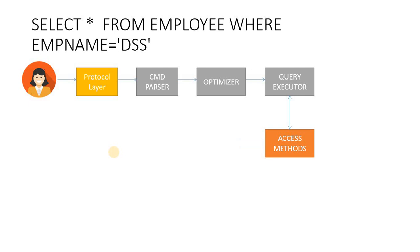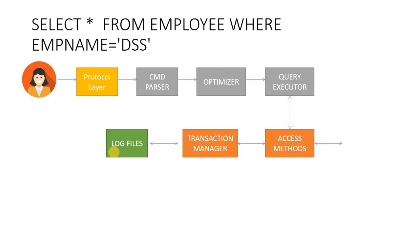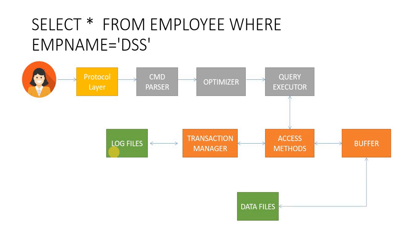We decide whether to use log files or data files. The Transaction Manager makes that decision — it decides between data files and log files. In the log file there is a buffer, and in the buffer we serve the end user. The buffer itself is a memory cache. When data is found in the memory cache, it is served directly.